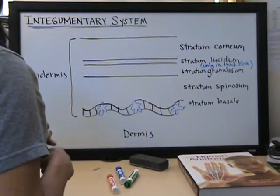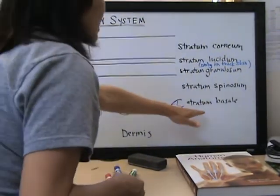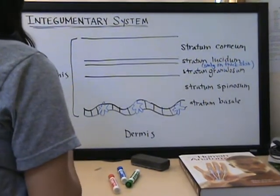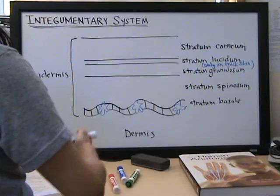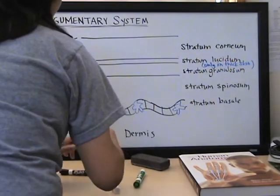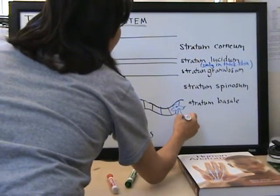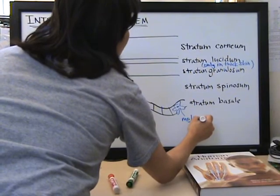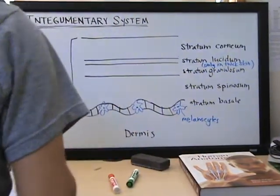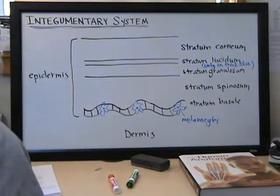The deepest layer is the stratum basale. Now, the stratum basale is made up of cuboidal cells and this is where mitosis occur, this is where cell division occurs and you make the new cells. All right. There's a few things in here. Notice I drew some cells in here. These are melanocytes, which produce the pigment called melanin and melanin is what gives our skin color.